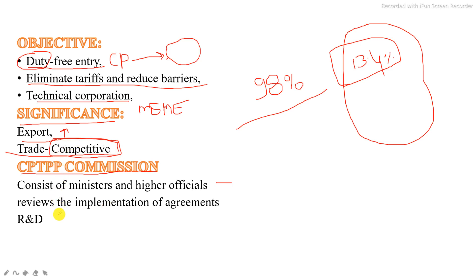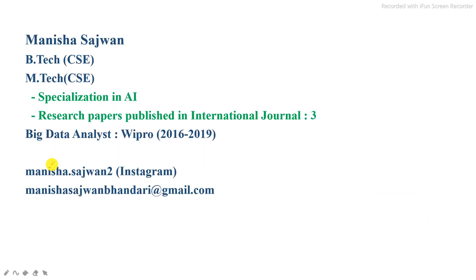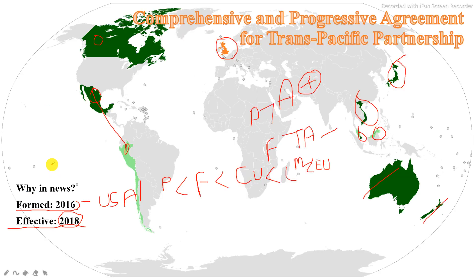So we have covered: what a free trade agreement is, the difference between PTA and FTA, when this trade agreement was formed, when it came into force, what the CPTPP Commission is, and its objectives and significance. I hope you liked this video. Please do subscribe to my YouTube channel, like, share, and comment. I will be providing another lecture for this series and for geography optional as well. Thank you so much.